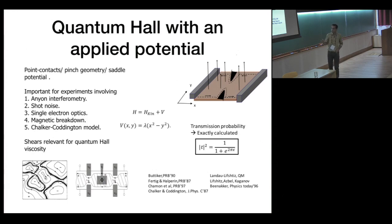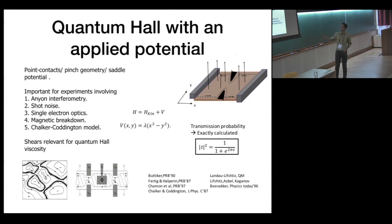Since this is a scattering problem, one thing calculated in this context is the transmission probability. This transmission probability has a particular form which looks like a thermal form, and this was first calculated exactly in the works of Fertig, Halperin, and Büttiker long ago, and also in other contexts.